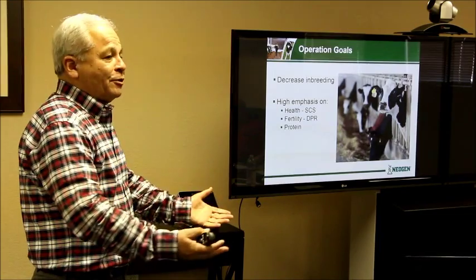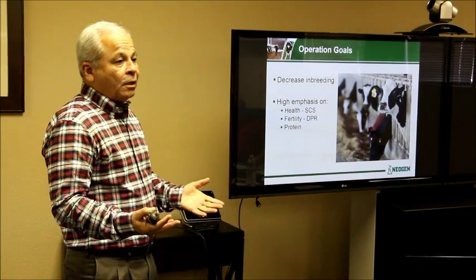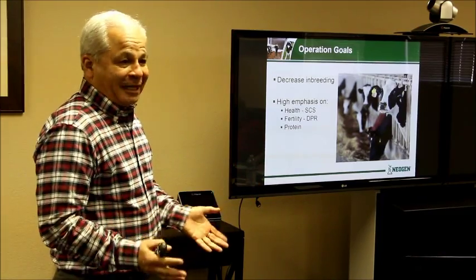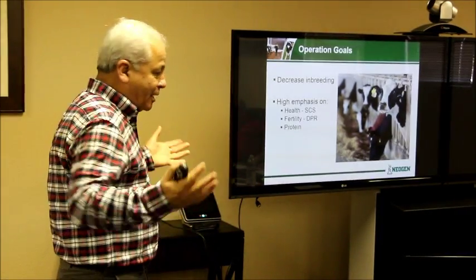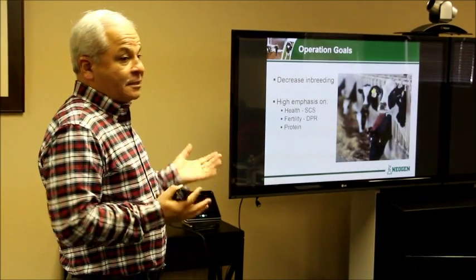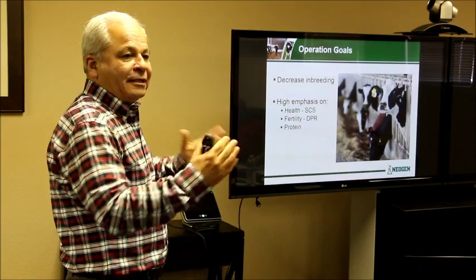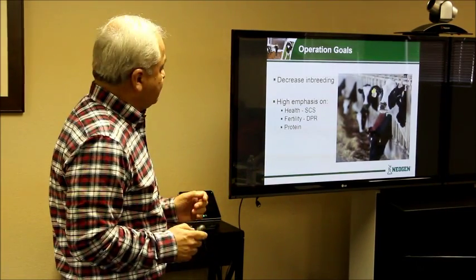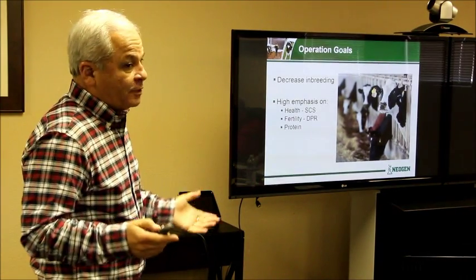What we give you in the results is somatic cell score — it's a formula, not somatic cell count. A lot of times when the customer reads the sheet and sees somatic cells, he thinks it's the count. It's not. It's the score that helps you compare — that's the only purpose of the score, just for comparison.